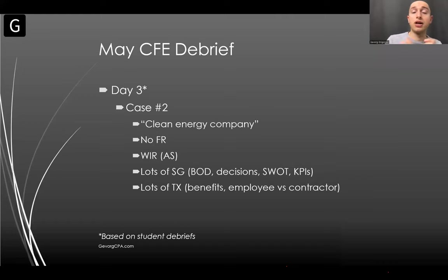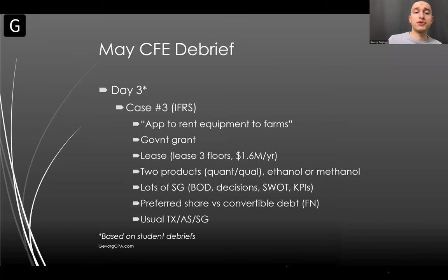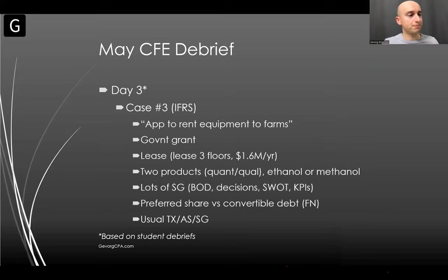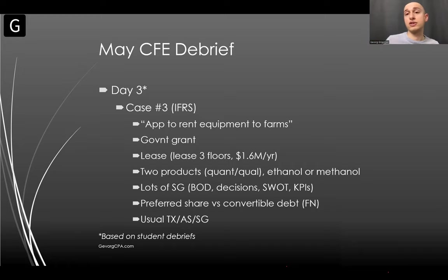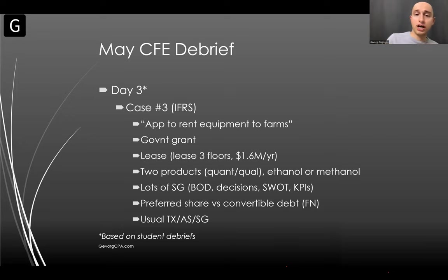The third case was an IFRS case about a company that made an app to rent equipment to farms. There were two FR AOs: a government grant and a lease question. Under IFRS, lease accounting uses IFRS 16. For government grants, you state the two criteria for recognition and conclude whether it's recognized or not. In day three they don't really test depth — it's more about time management and touching all topics. Besides those two IFRS questions, there were MA questions, strategy, a complex preferred shares versus convertible debt financing question, and the usual tax, assurance, and strategy questions.